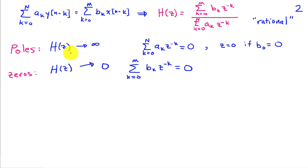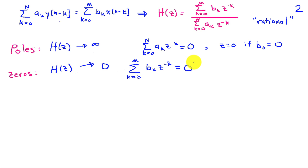We define special values of z using the terminology poles and zeros. A pole occurs when H(z) approaches infinity, which clearly happens at values of z for which the denominator is 0. There are other cases too — for example, if b_0 is 0, then z = 0 could also be a pole. Zeros occur when H(z) equals 0, i.e., when the numerator polynomial equals 0. The name 'poles' comes from visualizing the magnitude of H(z) as a surface: sticking a tent pole under that surface creates the shape seen near these poles.